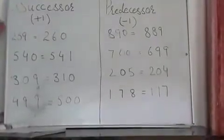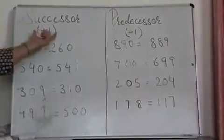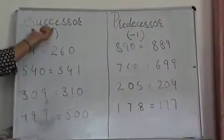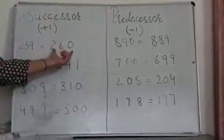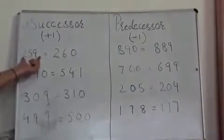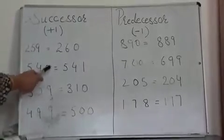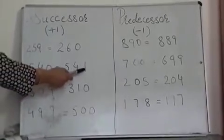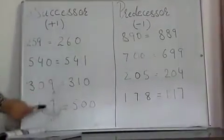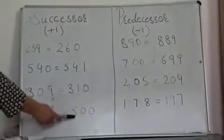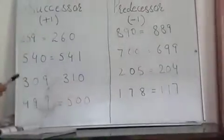Next topic I am going to discuss is successor and predecessor. We know successor means plus one, just after the number. Whatever number we have given, we have to just add one into it. Five hundred fifty nine plus one, we will write two hundred and sixty. Five forty plus one is five forty one. Three zero nine plus one is three hundred and ten. Four hundred ninety nine plus one will become five hundred. So successor is very well clear that plus one.